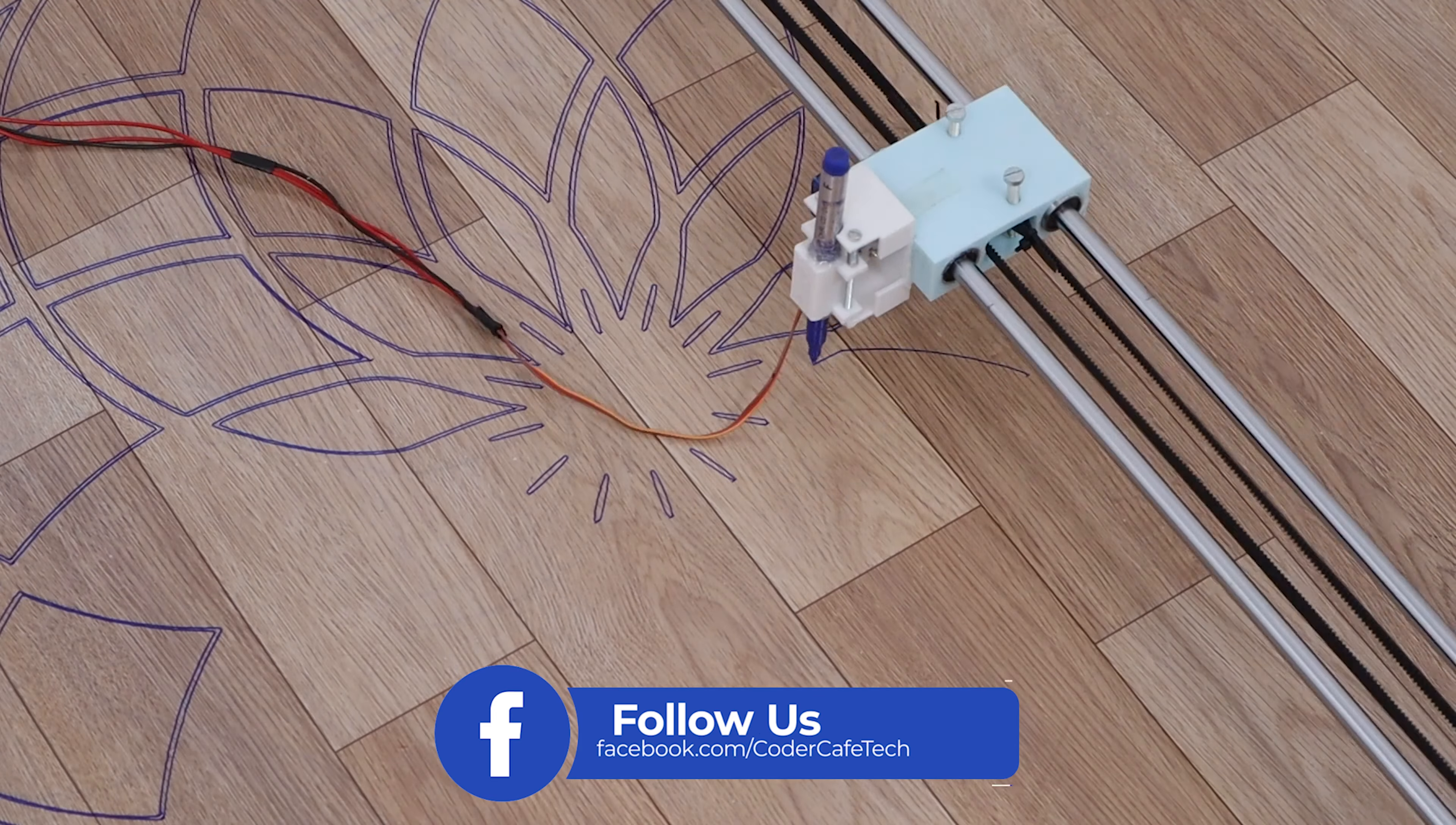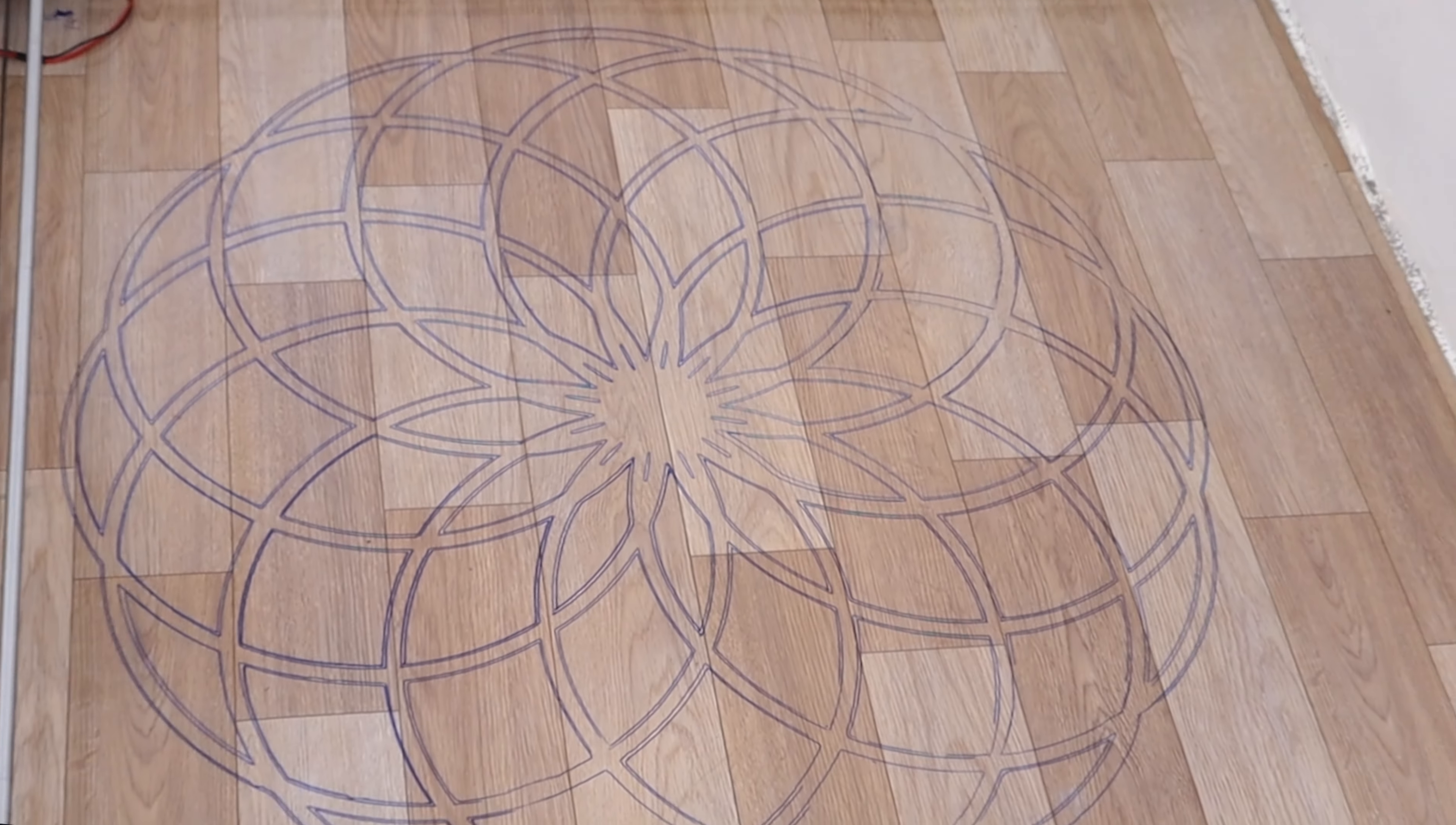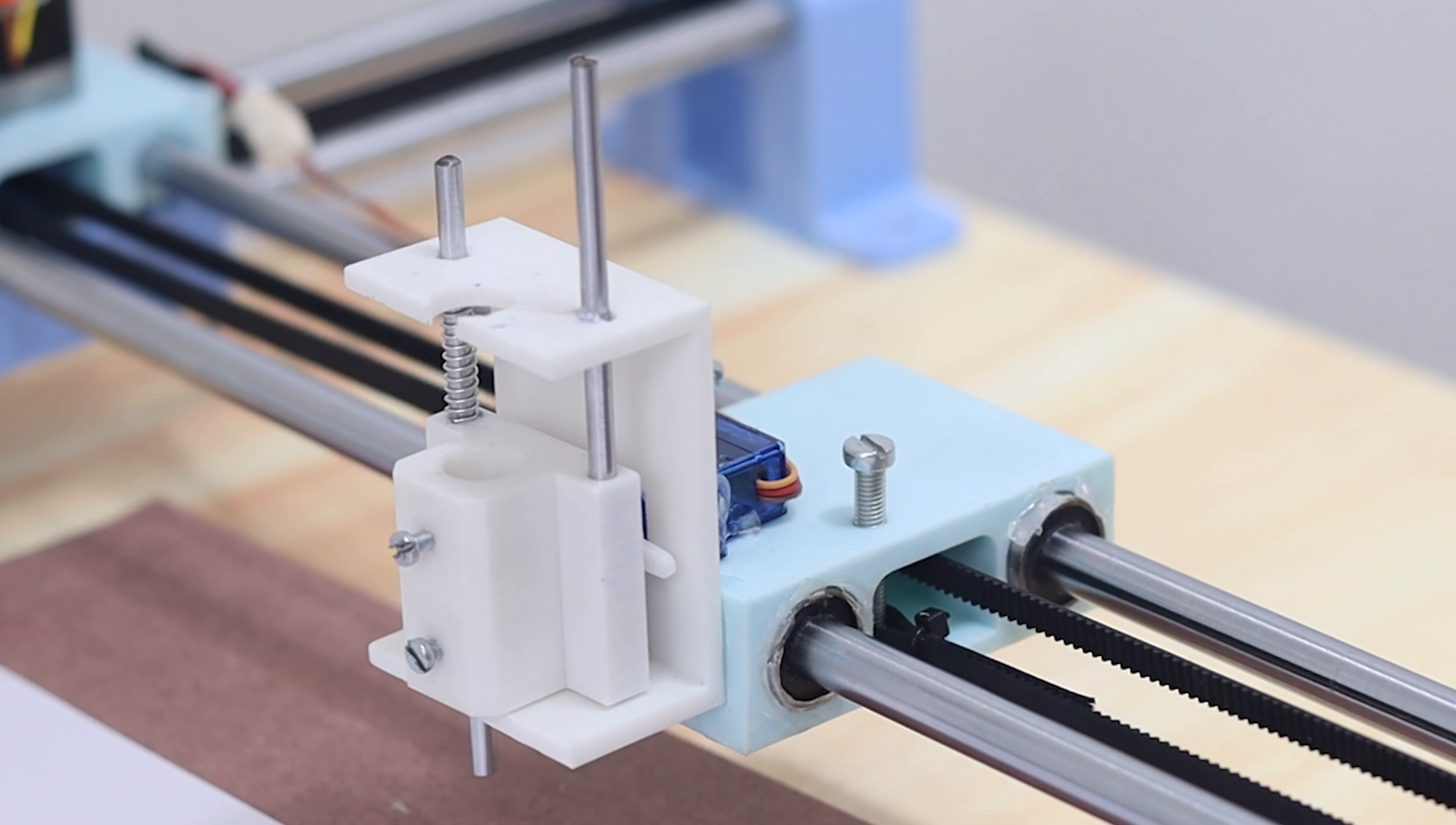The level of detail this plotter can output is quite good. Let's have a look at the 3D design. It is a design based on the Cartesian plotter where the goal was to make a large one. Here, we used a belt-driven mechanism to move the gantries with the 10mm linear rods.